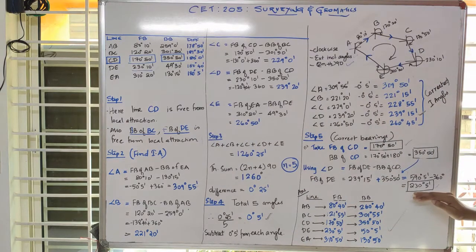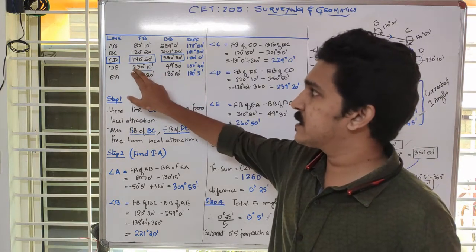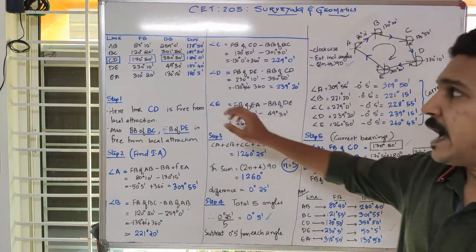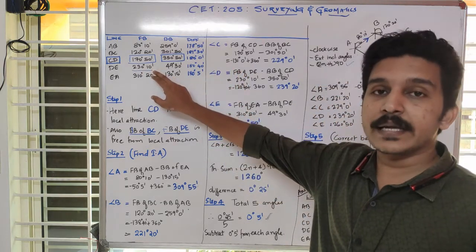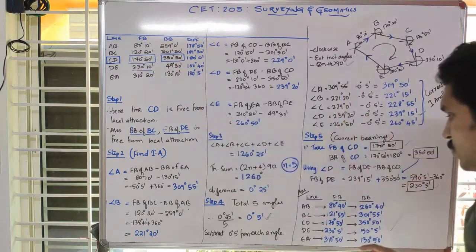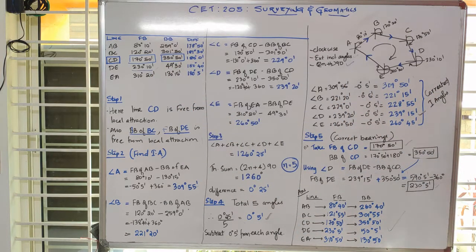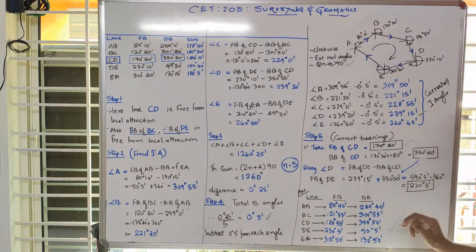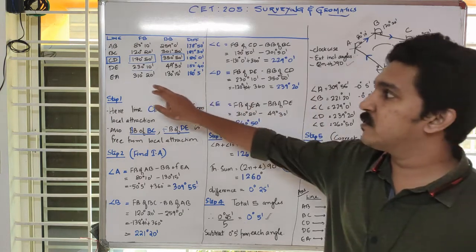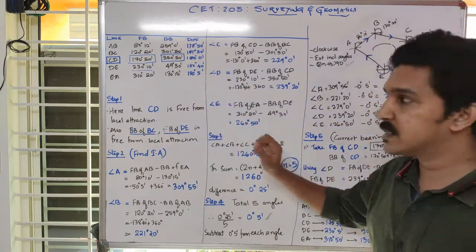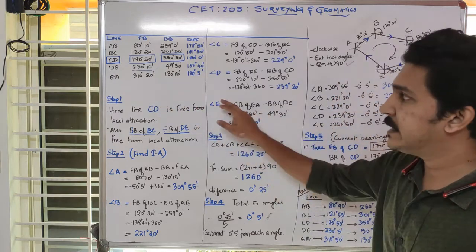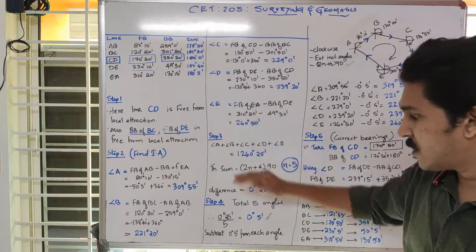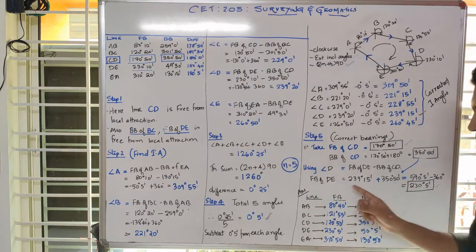Therefore there is an error; 230 degrees 5 minutes is the correct value. Similarly, we carry on the same steps. Since we have got 230 degrees 5 minutes as the actual forebearing of DE, we subtract 180 from it to get the new backbearing, which is 50 degrees 5 minutes — not 49 degrees 30 minutes. Then the next value is EA. We have to find any angle which includes EA, and substituting all these values, we get the final answer as shown.